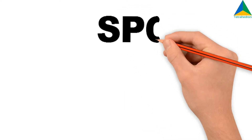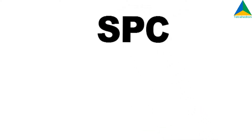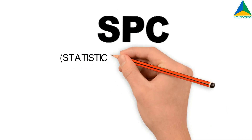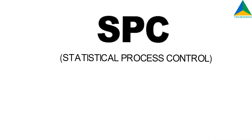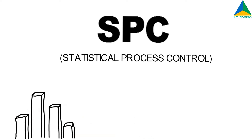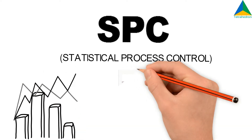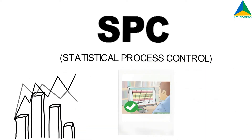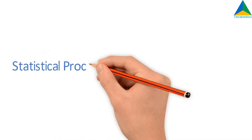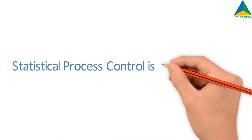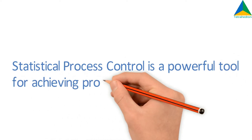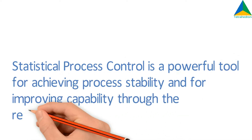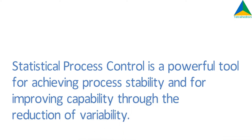SPC — Statistical Process Control. Statistical Process Control is a powerful tool for achieving process stability and for improving capability through the reduction of variability.